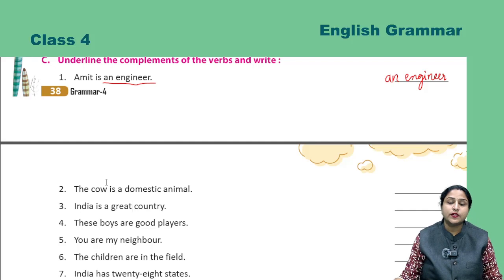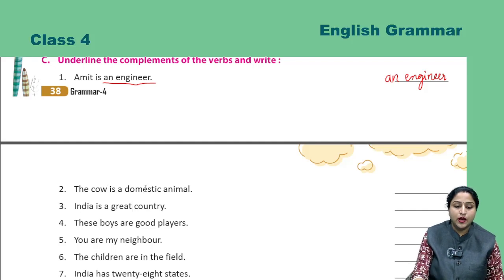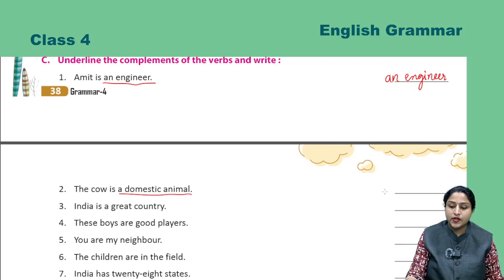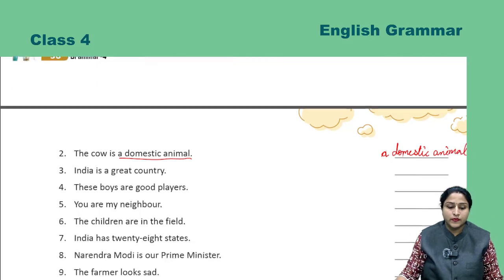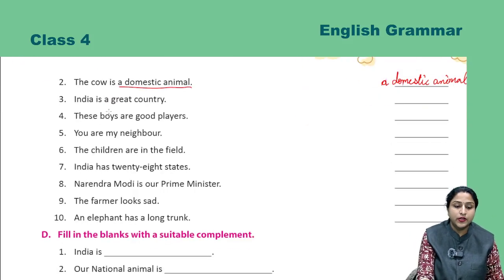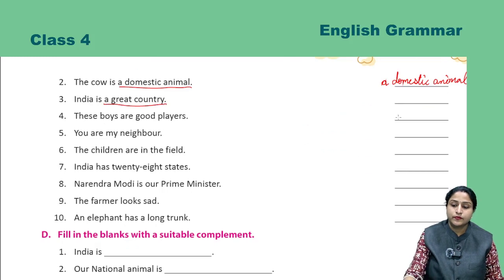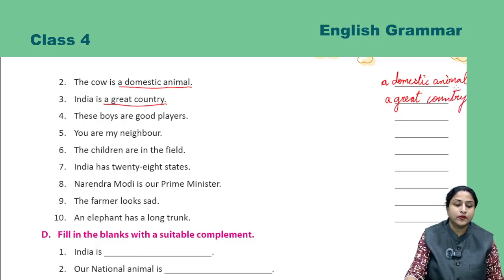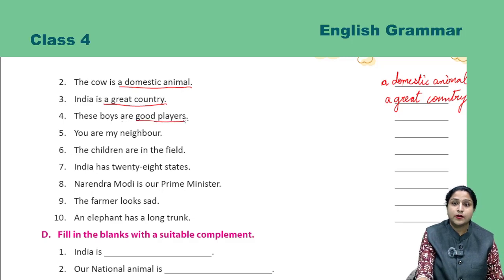Second: 'The cow is a domestic animal.' So 'a domestic animal' is the complement — write it accordingly. Third: 'India is a great country.' The complement is 'a great country.' Next: 'These boys are good players.' The complement is 'good players.'